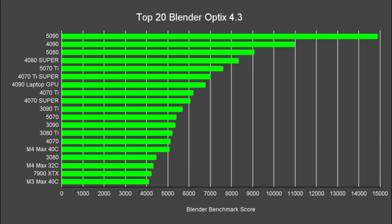So what is the news about the 5070 Ti? Well, it's faster than I expected — by about 2%, 3%, maybe up to 4%. So I've updated my charts. If we zoom out to see how it stacks up against other cards, we can see here at 7,616 points it remains in fifth position, sitting nicely between the 4070 Ti Super and the 4080 Super.